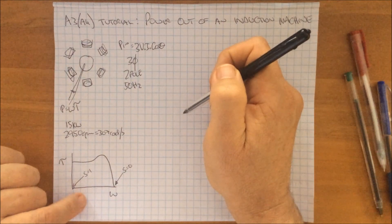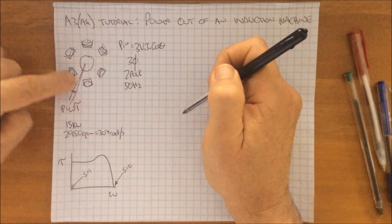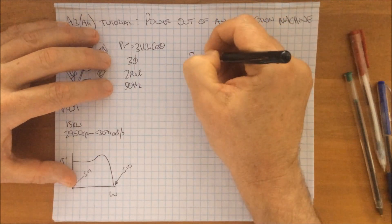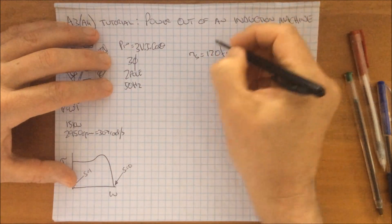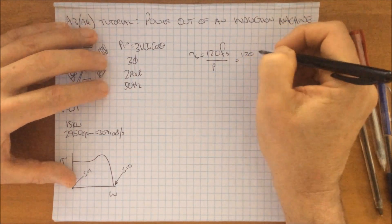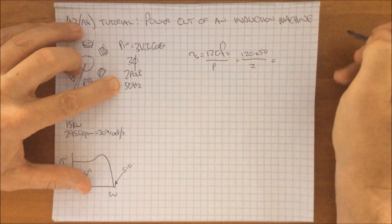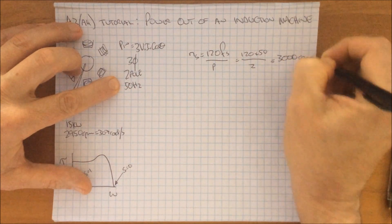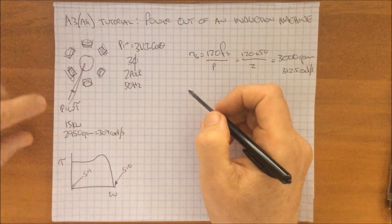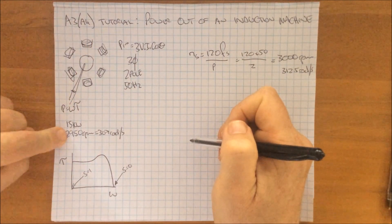The slip is a defining thing, so we need to find out what the slip is. We know the speed of the shaft but we don't know the synchronous speed of this rotating field, but we can figure it out quite easily. The synchronous speed of the rotating magnetic field is 120 times the frequency of the supply over the number of poles of the machine. In this machine it's 120 times 50 hertz divided by 2 poles, which gives us a synchronous speed of 3000 rpm, which is about 312.5 radians per second.